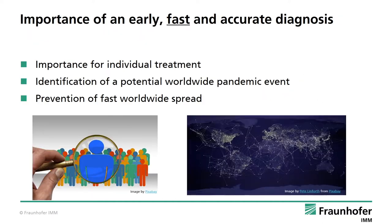All these changes require a change in diagnostics. Diagnostics should be early, fast, and accurate. For example, in cancer treatment, an individual treatment is thought to be the strategy to increase the chances of survival, and the current pandemic event shows why a fast diagnosis could be important to prevent the spread of a disease.